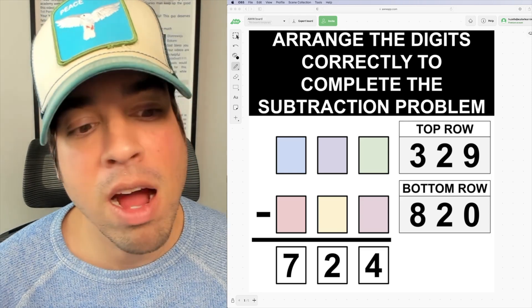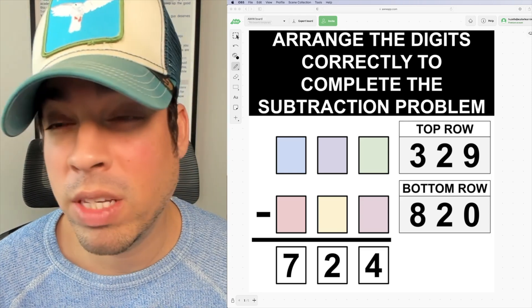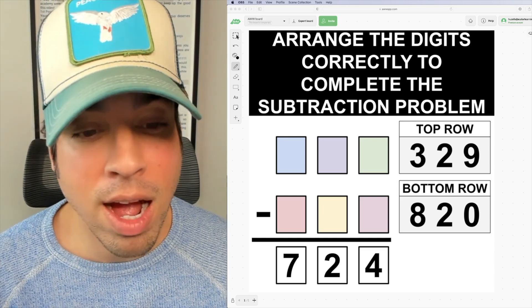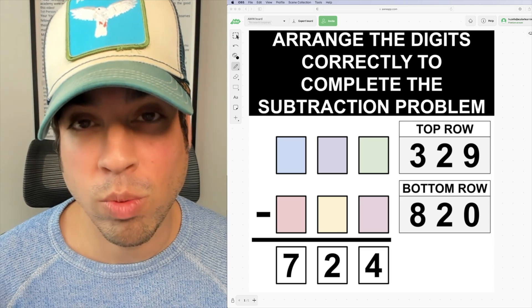Notice in that top row in the green, purple, and blue spaces, you're only going to have three, two, and nine as your options. For example, in the bottom row, you've only got eight, two, and zero to work with.